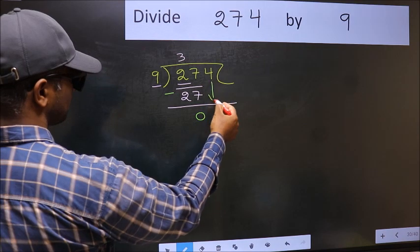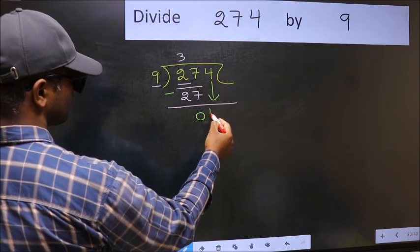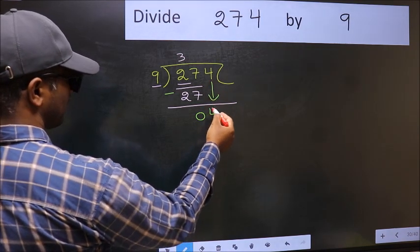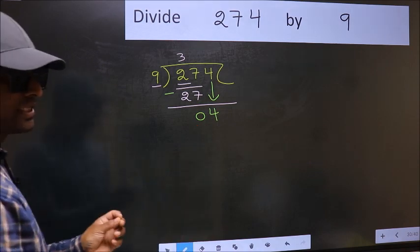After this, bring down the beside number. So 4 down. After this step, the mistake happens.